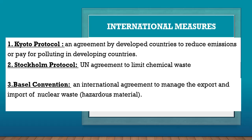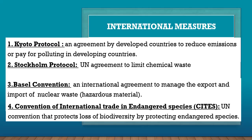The Basel Convention is an international agreement to manage the exports and imports of nuclear waste, sometimes called hazardous material. The CITES Convention — Convention on International Trade in Endangered Species — is a UN convention to protect loss of biodiversity. Biodiversity means different species on Earth, animals and plants. It protects endangered species like the rhino and the elephant, which are in danger of becoming extinct. Those are the international measures taken to protect the environment. Thank you.